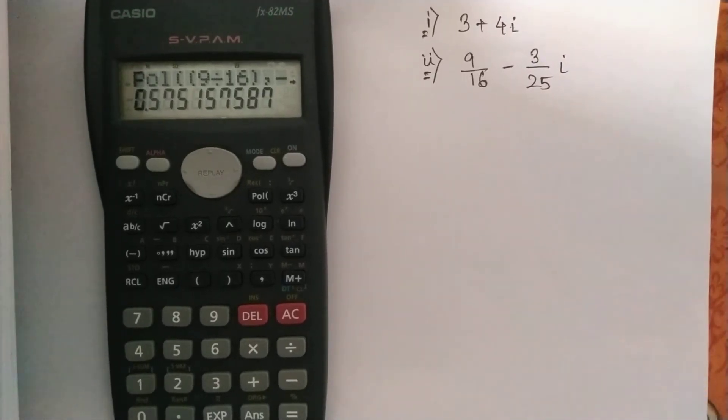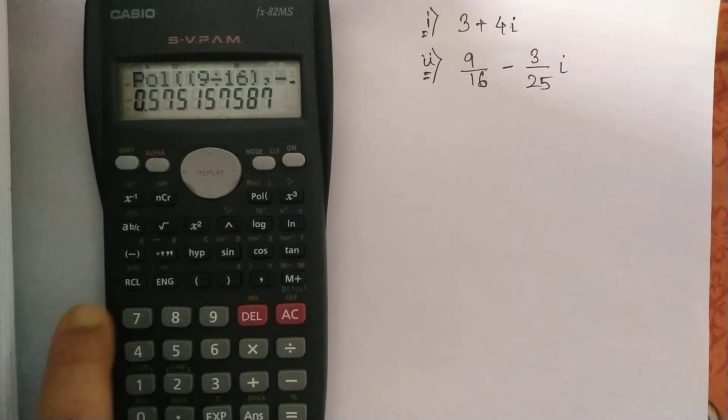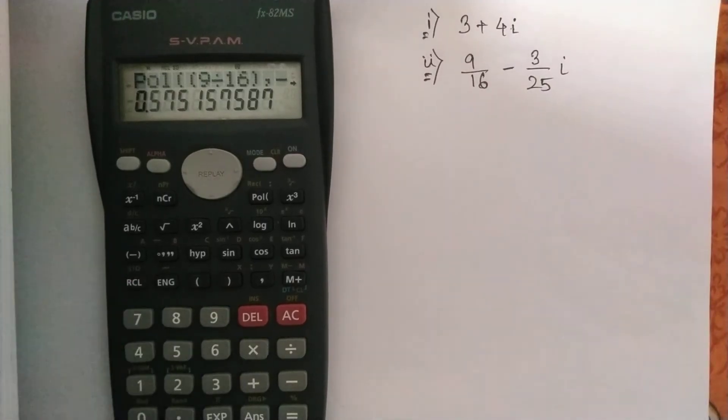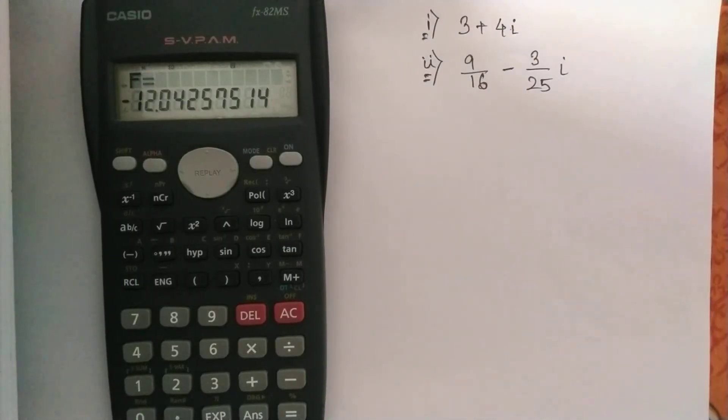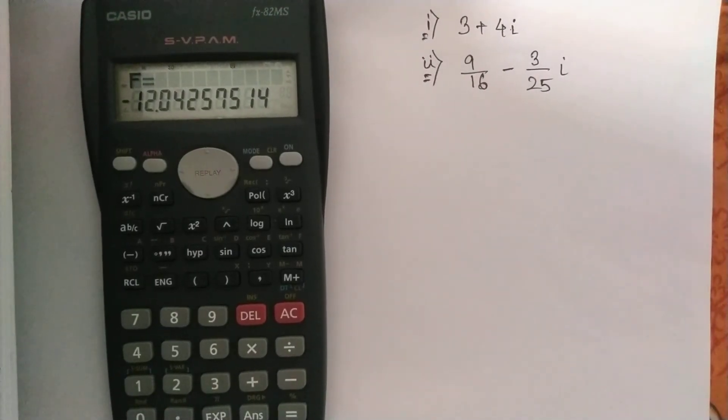And if you want to get the argument or the angle, what you have to do is press recall (RCL) and then tan, which is actually F written here. So if you press it, you get minus 12.04 degrees.